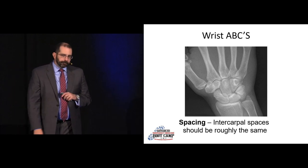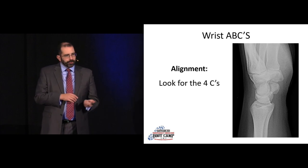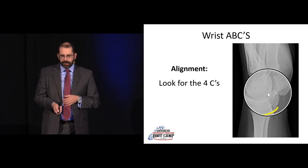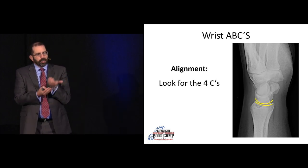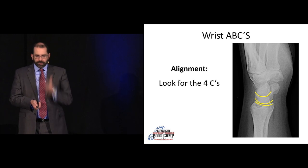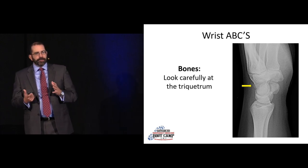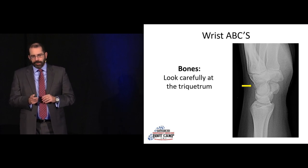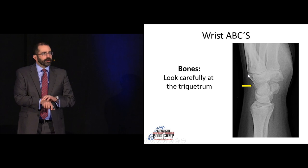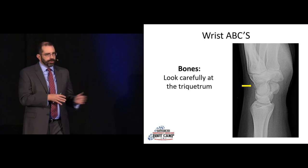Looking at the lateral wrist, in terms of alignment we talk about four C's: the distal radius cups the lunate — which is crescent-shaped, named after a crescent moon — the proximal lunate and distal lunate cup the capitate, forming a nice straight line. In terms of bones, we pay very close attention to the triquetrum — that little nubbin of bone at the back, the dorsal-most carpal bone — because the vast majority of triquetral fractures will only show up on this lateral view.